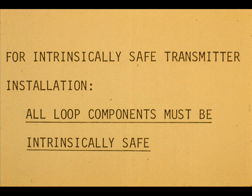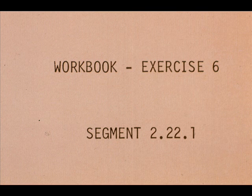Veritrac transmitters are suitable for use in hazardous areas such as National Electrical Code Class 1, Group C or D, Division 1 areas. However, for any transmitter to be intrinsically safe, all items in the loop must also be intrinsically safe. Now work exercise number 6 in your workbook.